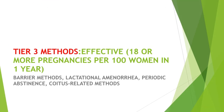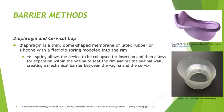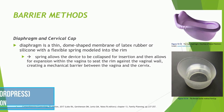The Tier 3 methods are effective with a failure rate of 18 or more pregnancies per 100 women in one year. This includes barrier methods and fertility awareness-based methods such as lactational amenorrhea, periodic abstinence, and coitus-related methods. Barrier methods include the diaphragm and the cervical cap.